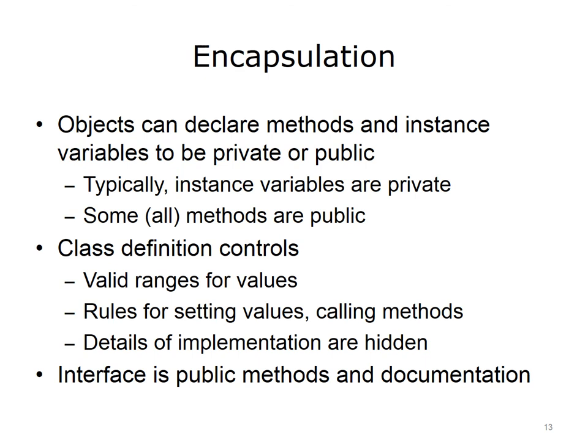If the variables were public and could be modified by any code, there would be no guarantee that the values were valid. For example, if there is an instance variable of a well-encapsulated class that is used as the denominator of a fraction, the methods that set this value could ensure that it was never set to zero. If the class were not well encapsulated and the instance variable was public, there would no longer be a guarantee that the instance variable was not zero. Any other code that uses this class accesses only what is called the interface of the class — made up of the public methods and any documentation — focusing only on the details needed to use the class, not on how the class is implemented.